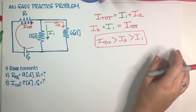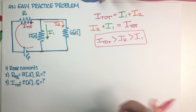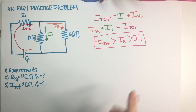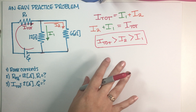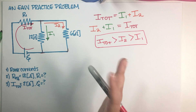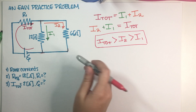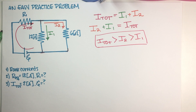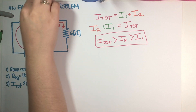Final answer for the ranking: I_total is the greatest, then I2, then I1 is the smallest. Now for Part 2: if the equivalent resistance is 18 ohms, what is R1? We are given two of the resistors and the equivalent resistance. We need to reduce this circuit to get an equation relating R1, since we're not given E or I at this point.